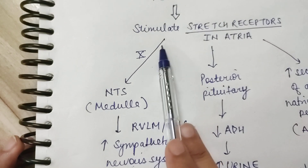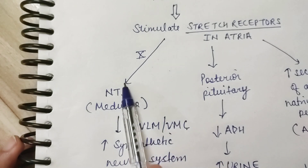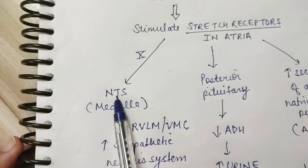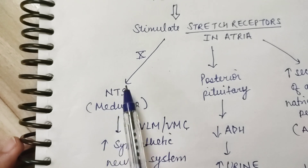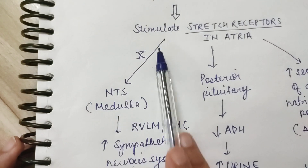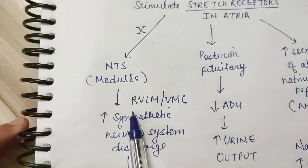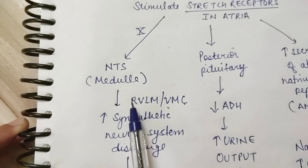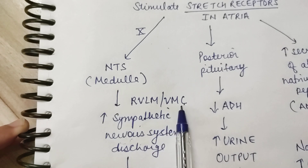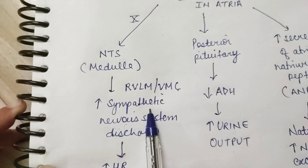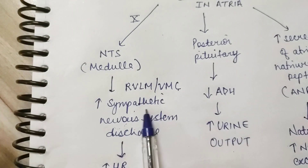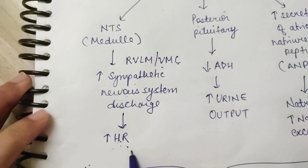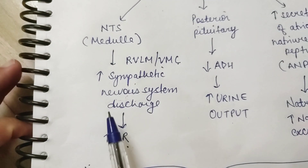Whenever these stretch receptors are stimulated, the effect is in three wings. In the first wing, the signal is carried via the vagus nerve to the relay center in the medulla — that is the NTS, nucleus tractus solitarius. In the NTS, there is stimulation of the RVLM or vasomotor center, which is the sympathetic nucleus, leading to an increase in sympathetic nervous system discharge and hence an increase in heart rate. So the first wing is complete.